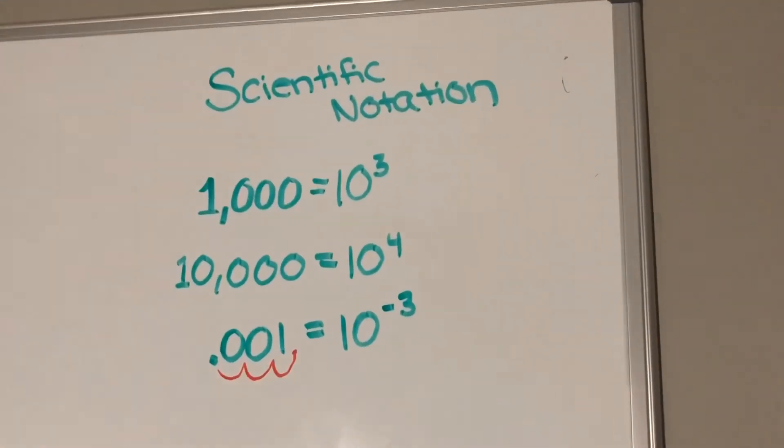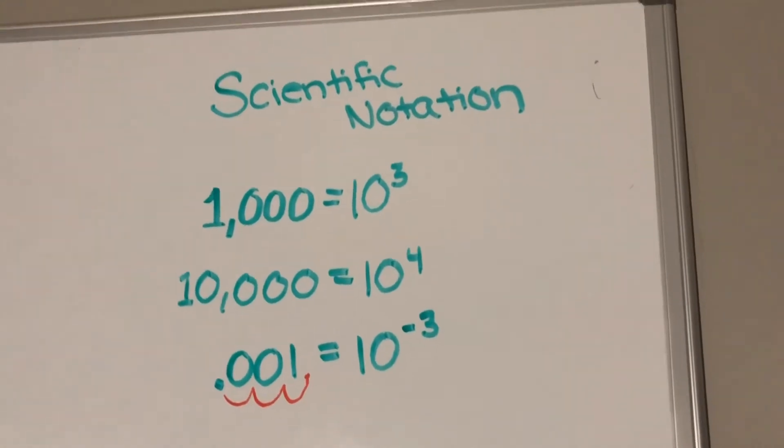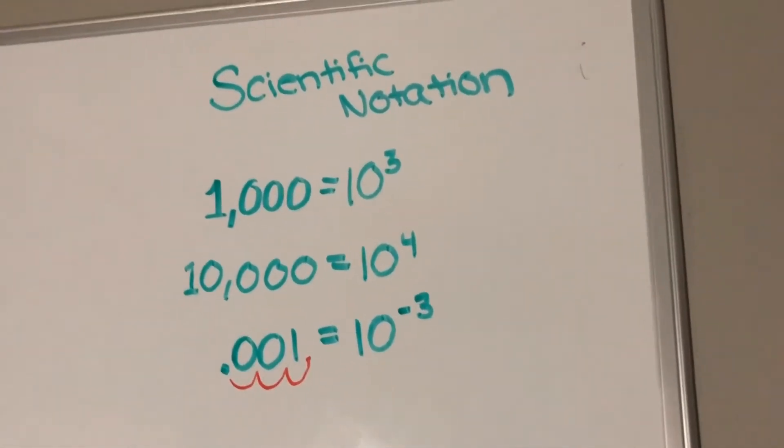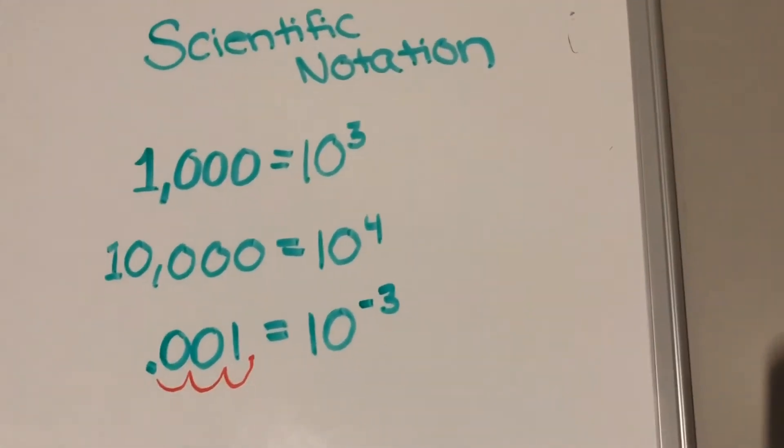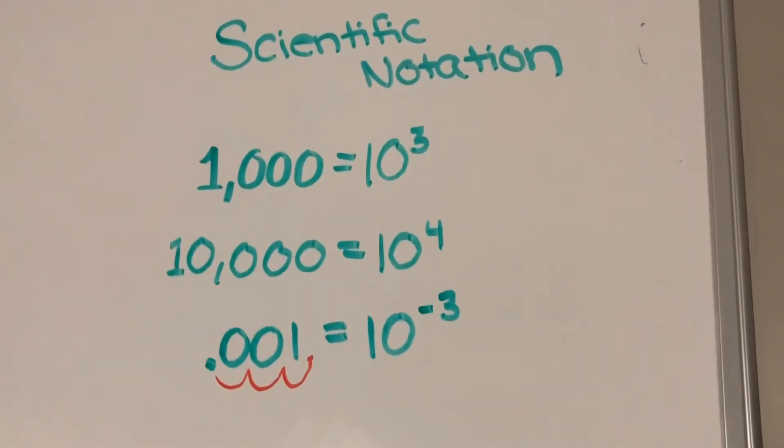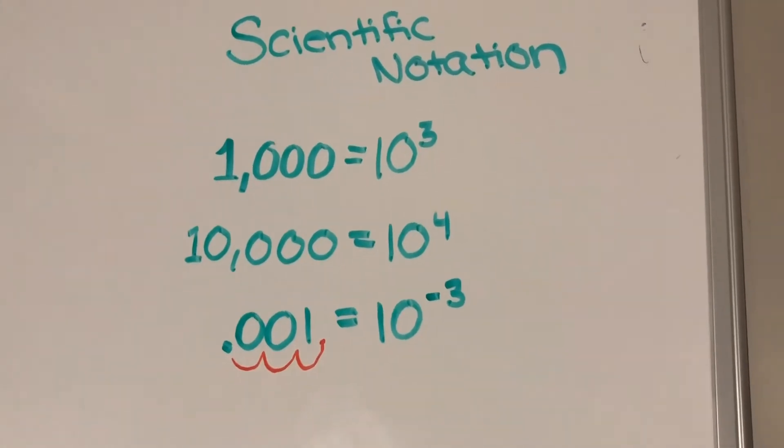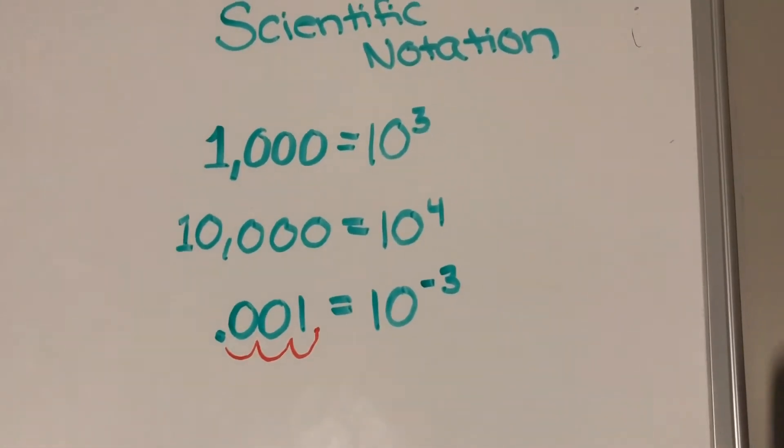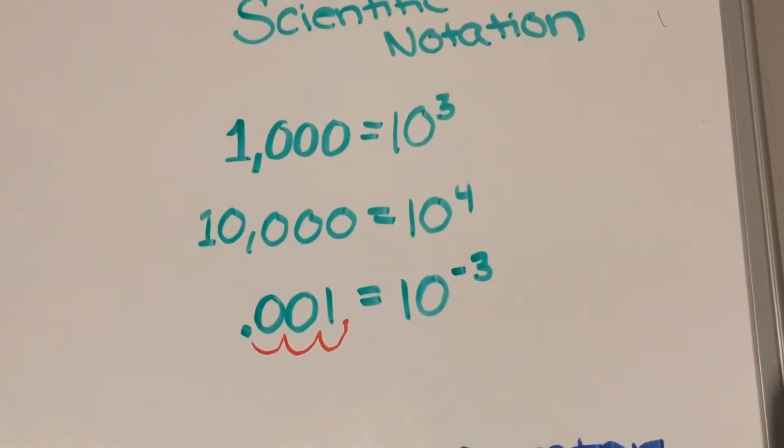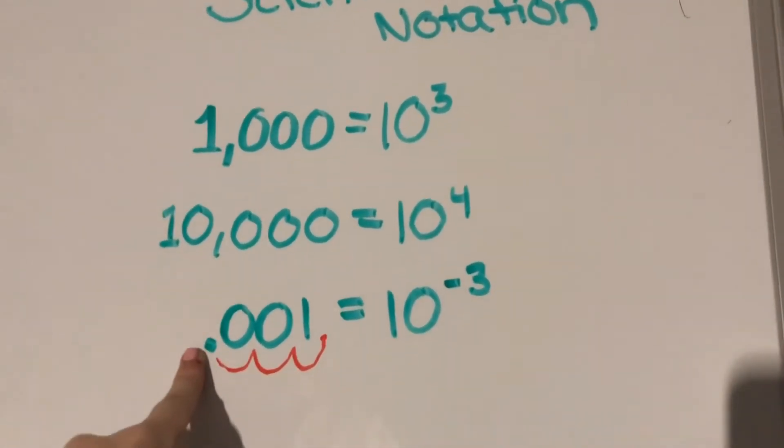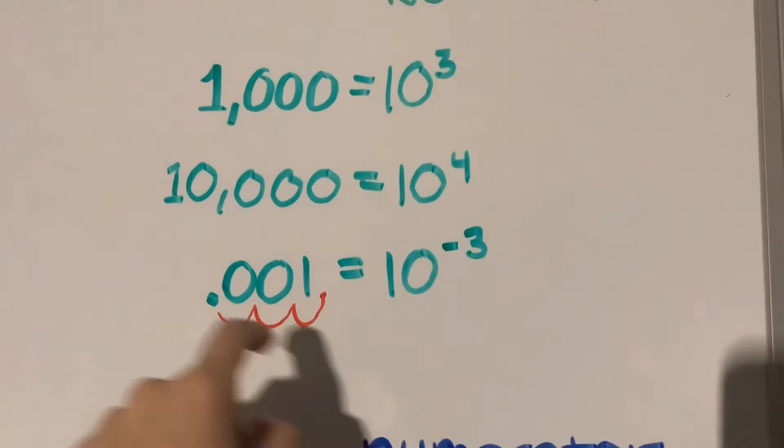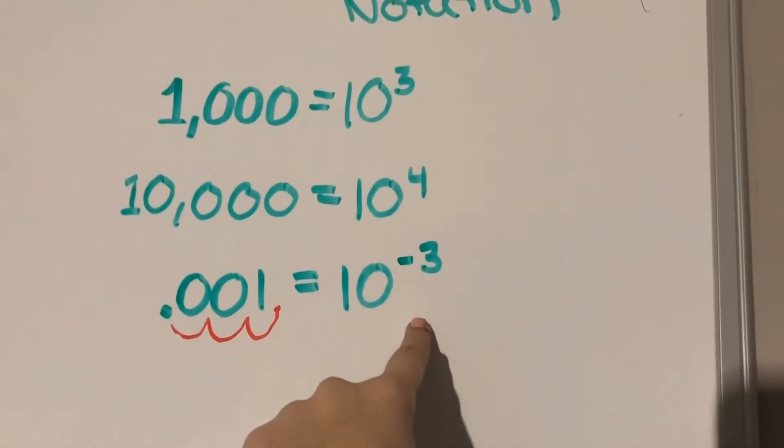Here we have basic scientific notation, which is used to simplify a big number. For example, 1,000 could be simplified into 10 to the 3rd power, using the 3 zeros. 10,000 would be 10 to the 4th power. And here, we follow here, and go 1, 2, 3, and that's where the decimal is. So it's going to be a negative exponent, 10 to the negative 3rd power.